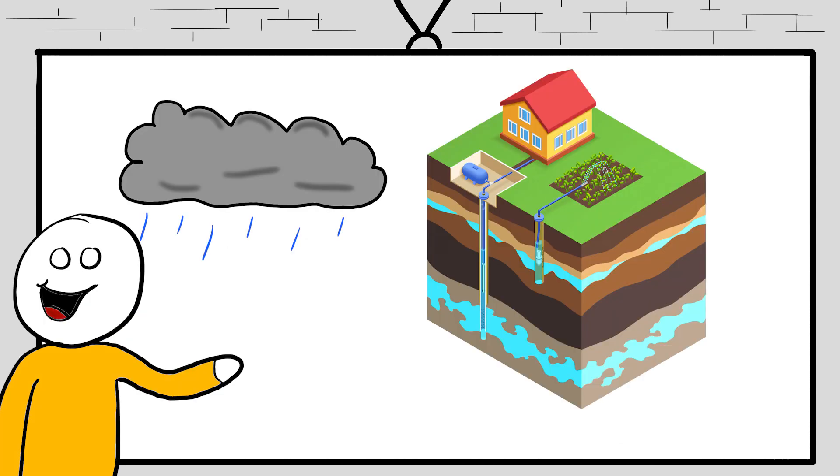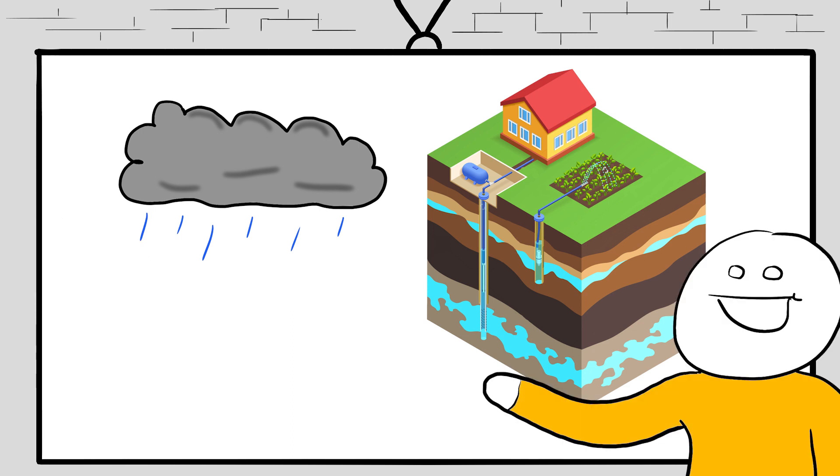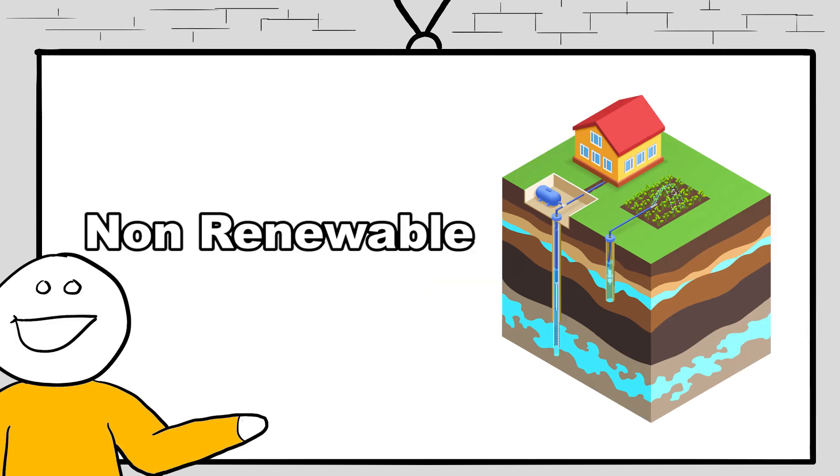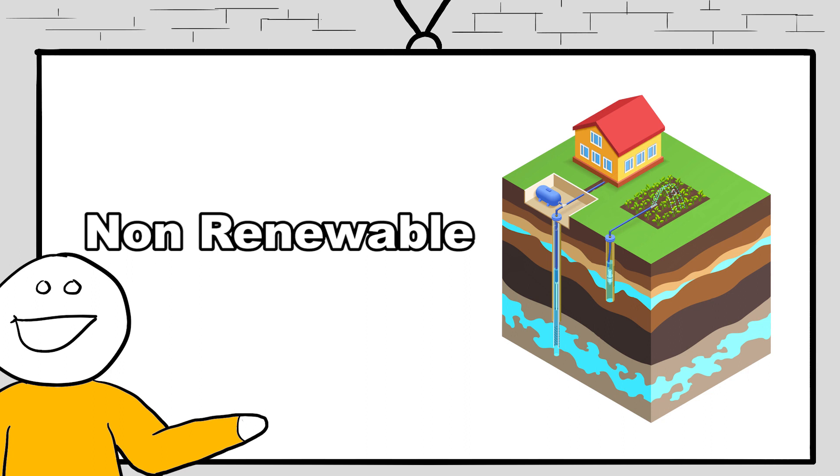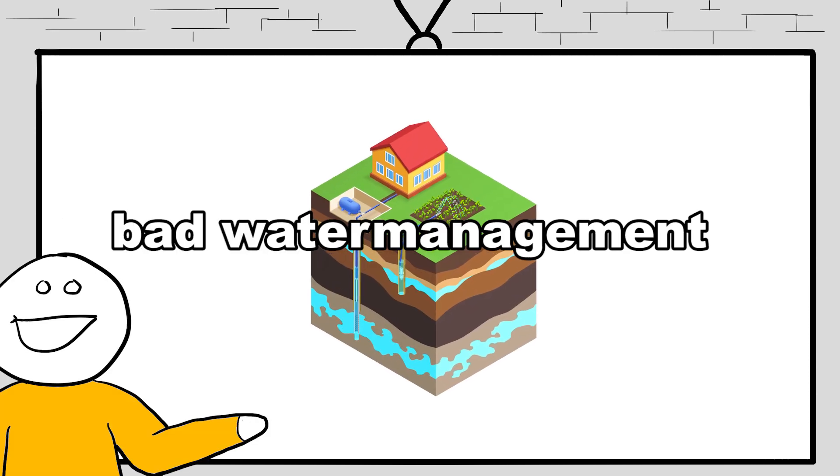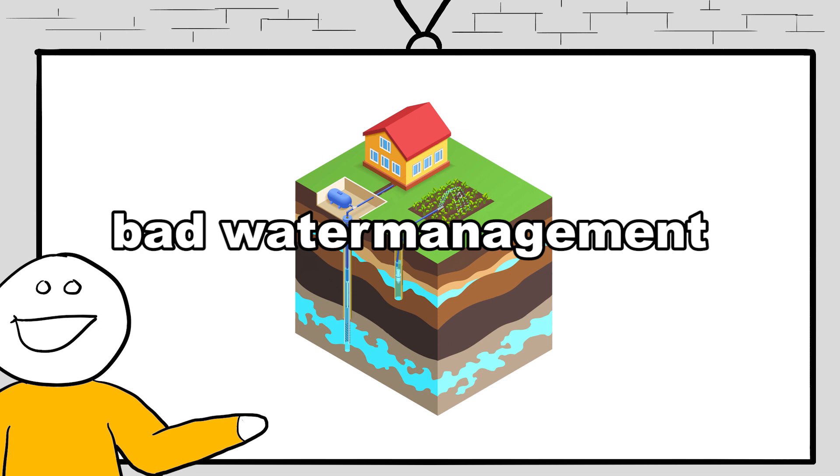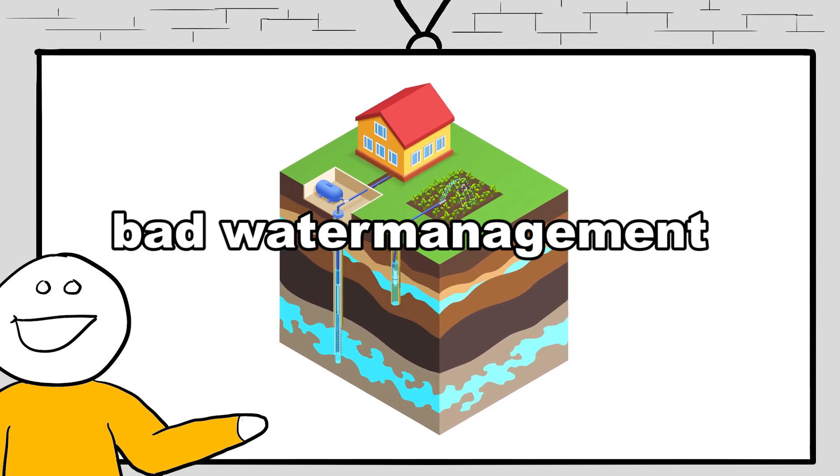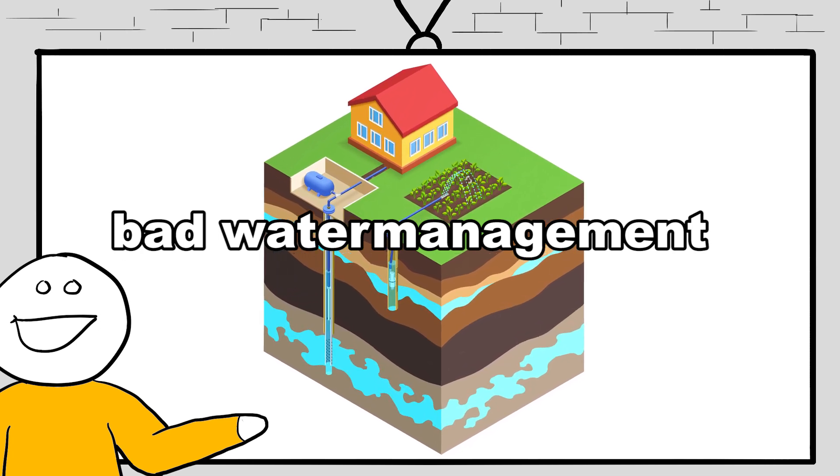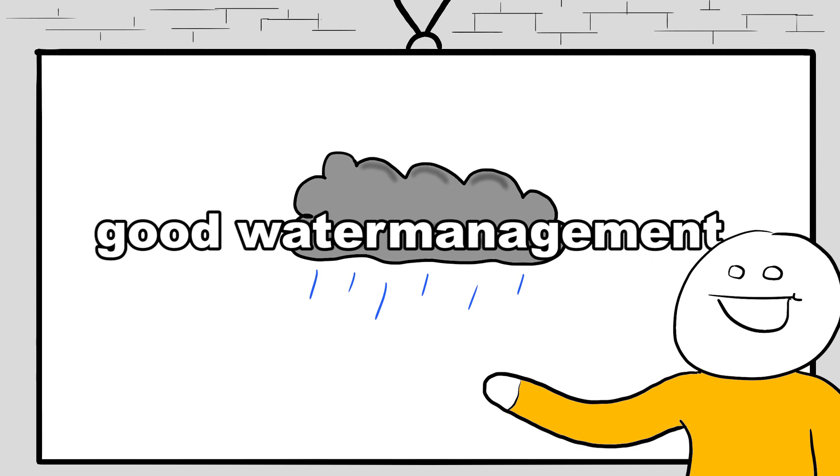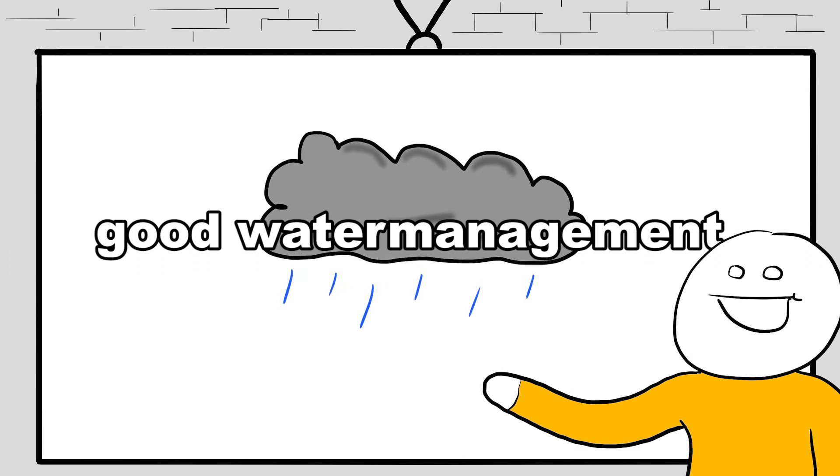And now you also have a difference between renewable water sources and non-renewable water sources. The aquifers are the non-renewable water sources, and the rain, the precipitation and the rivers, they are renewable water sources. If a country uses all its non-renewable water sources, so it gets all its water from aquifers, it has bad water management. If a country gets all its water from rivers or precipitation, then it has very good water management.